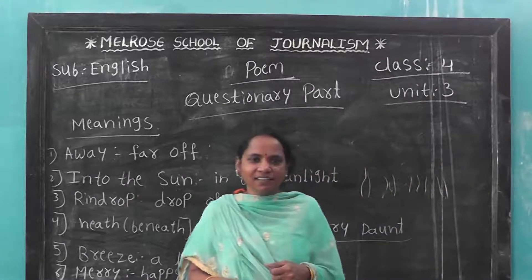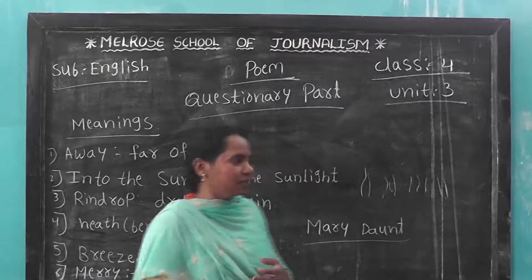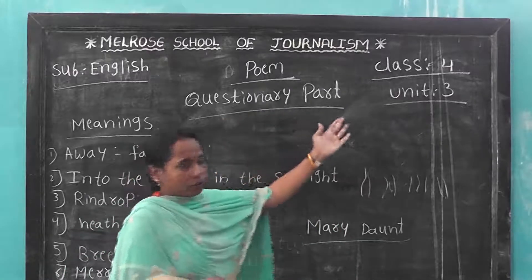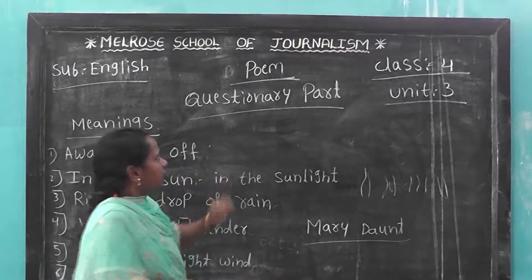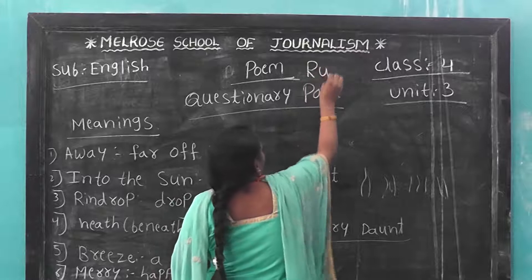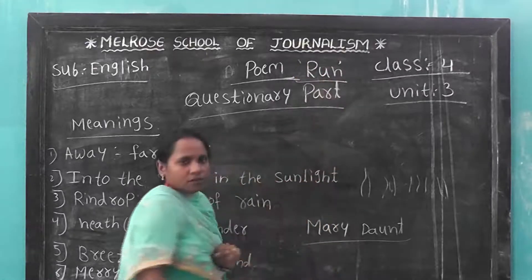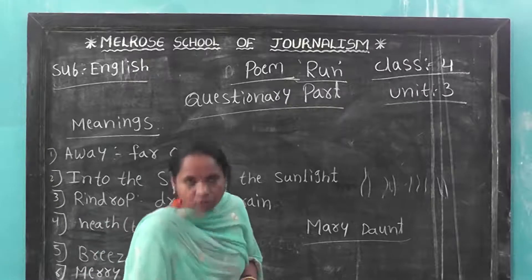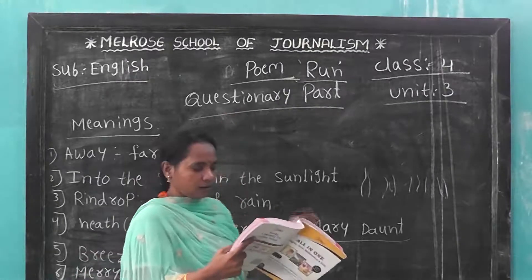Hi children, now I am going to make you learn Class 4, Unit 3, the poem 'Run'. I will make you learn the questionary part. First, what we have to learn in this poem 'Run' — the meanings.